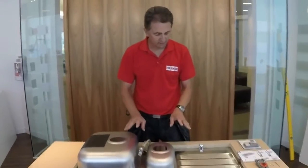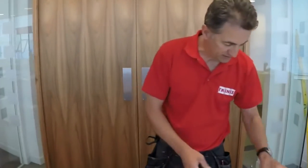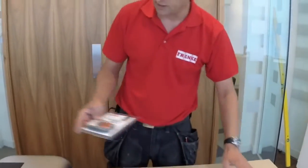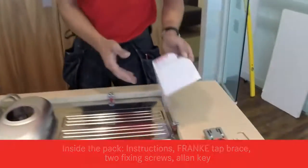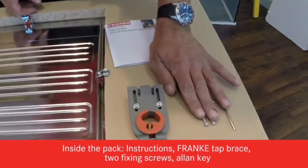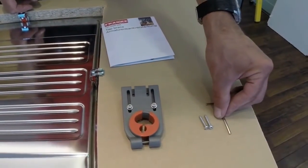We've got the sink upside down and we're going to fit a Franke tap brace. This is the product as it comes. Inside the product we've got the instructions, the brace itself, two fixed screws, and an allen key supplied.